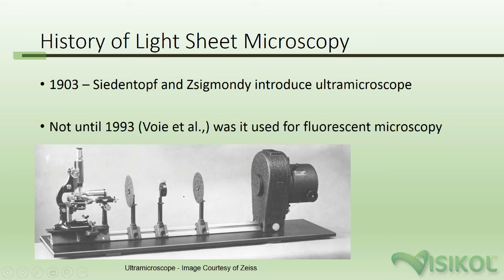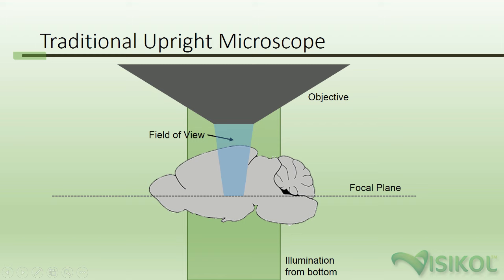The concept of the light sheet microscope is very old, dating back over 100 years to Siedentopf and Zsigmondy. However, it was not until 1993 that Voie paired light sheet microscopy with fluorescent labeling.